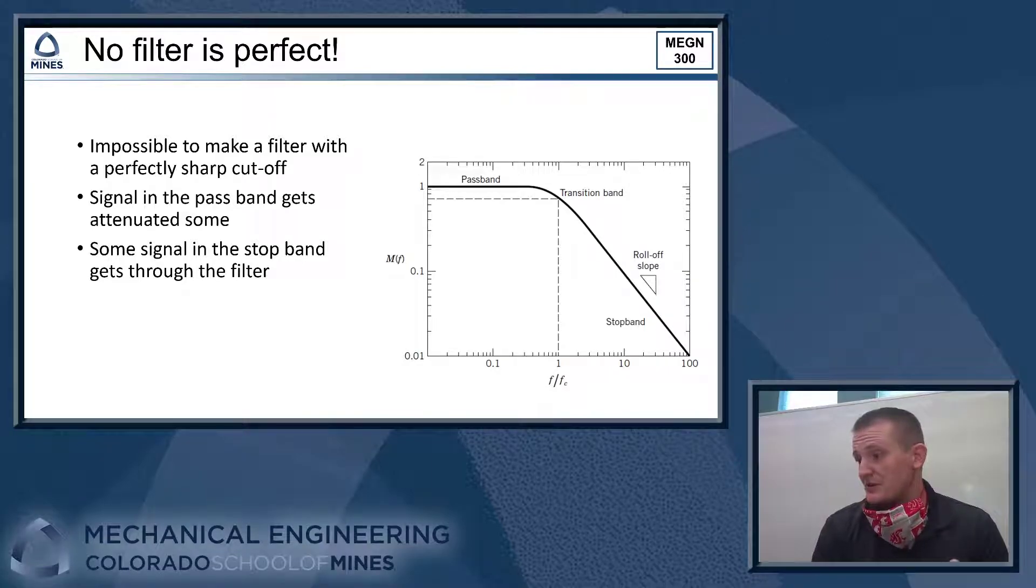The key concept here is that there's no such thing as a perfect filter. We can't make a filter that has a perfectly sharp cutoff between the pass band and the stop band. Generally, what happens is the filter does what we call rolling off. So as we get close to the cutoff frequency, some of the signal that's in our pass band is actually going to get attenuated or reduced a little bit, so its magnitude will become less.